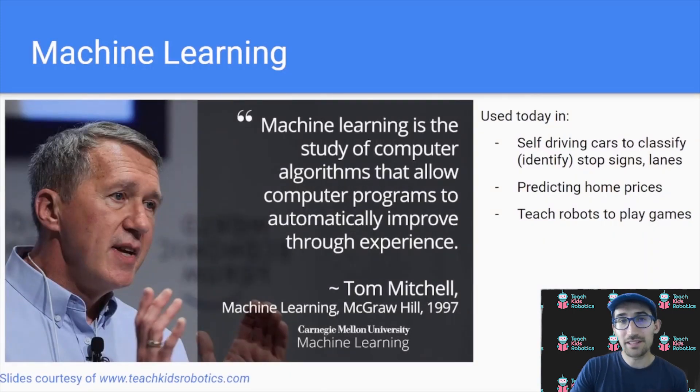So, what is machine learning? Machine learning is the study of computer algorithms that allow computer programs to automatically improve through experience. And you've got to remember, with robots, they're really computer programs and software that are allowing robots to really do things. And it's used today in things like self-driving cars, if you look at Tesla, being able to identify other cars and where lines are on the road, predicting home prices, or even teaching robots to play games or do things like fold laundry.